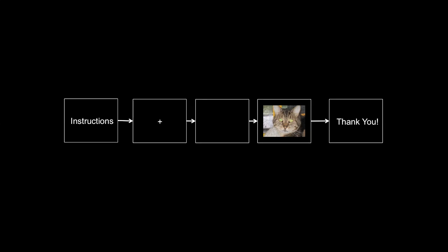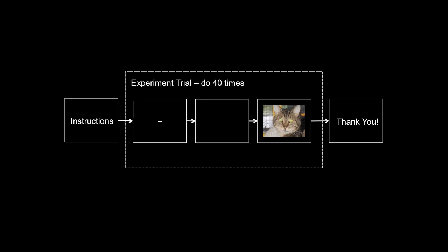This is the general structure of the experiment. We'll give them some instructions to begin with, then present a fixation point, then a blank screen, and then present the picture of the cat face. The fixation point and blank screen will each be set to 500 milliseconds, but we'll keep the picture on screen until the participant makes a response. At the end of the experiment, we'll give them a thank you message. We'll run this section 40 times — 20 male and 20 female cat pictures.